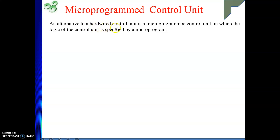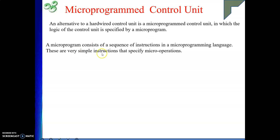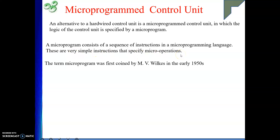Microprogrammed control unit is an alternative to a hardware control unit in which the logic of the control unit is specified by a micro program. A micro program consists of a sequence of instructions in a micro programming language. The micro programming language consists of zeros and ones — very simple instructions that specify micro operations. The term micro program was first coined by M.V. Wilkes in the early 1950s.